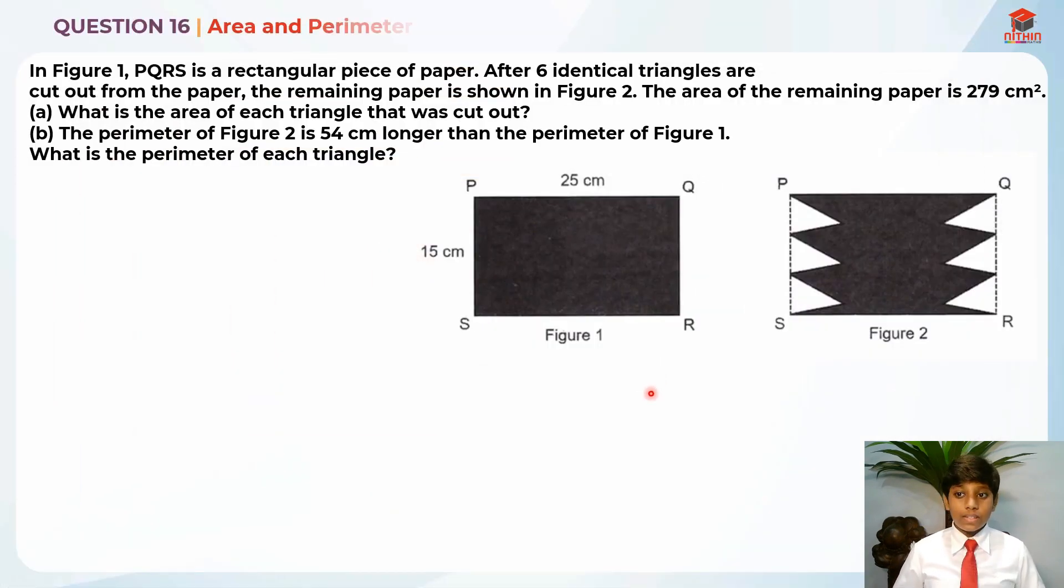This is question 16 and this question is testing us on area and perimeter. Let's read the question for part A first. In figure 1, PQRS is a rectangular piece of paper. After 6 identical triangles are cut out from the paper, the remaining paper is shown in figure 2. These are the 6 identical triangles that were cut out. The area of the remaining paper is 279 cm². Part A: what is the area of each triangle that was cut out?